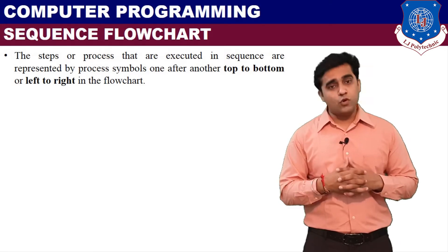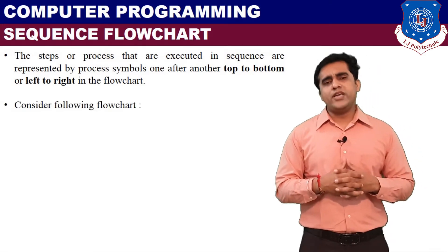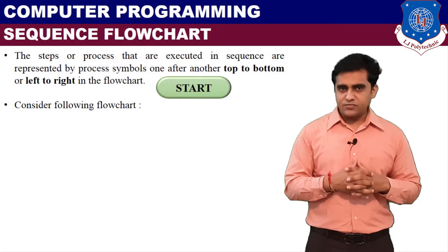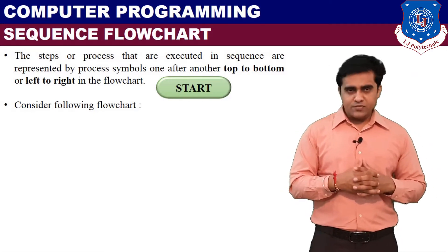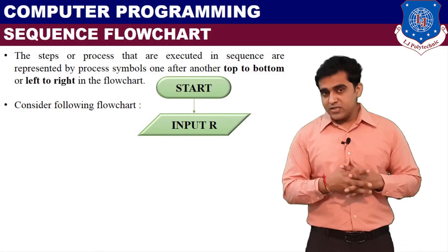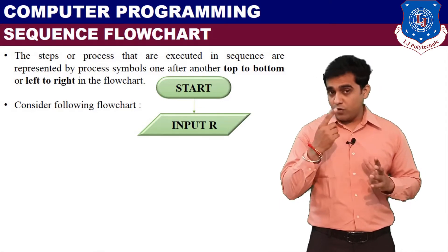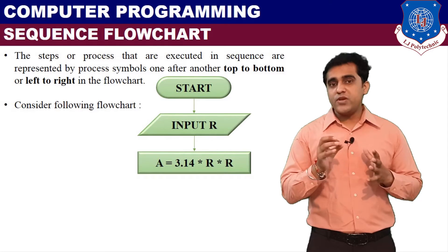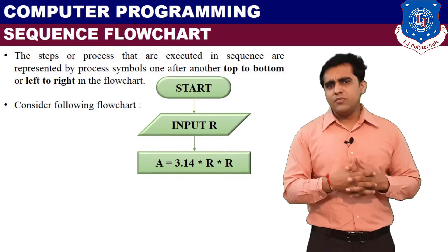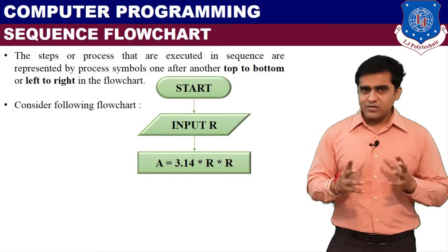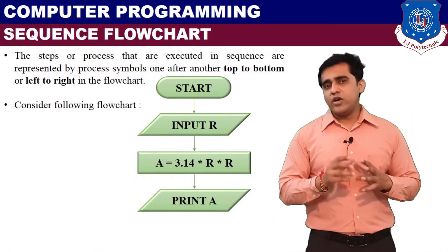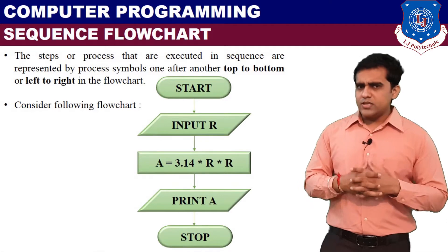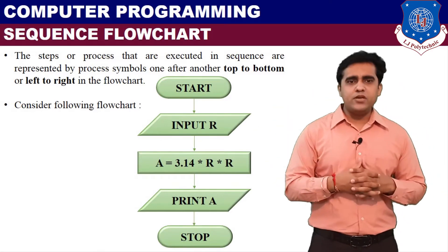For example, I want to find area of circle, so the flowchart of this question will be like this: first start. This start will come in terminal, then flowline, then input radius. It will come in input-output symbol, then flowline, then the equation to find area of circle is A equals to 3.14 into R into R. It will come in process, then flowline. The output will be stored in A, so output A or display A in input-output symbol, then flowline, and at the end stop. So this is top to bottom, step by step in a simplest form. This is called sequence flowchart.